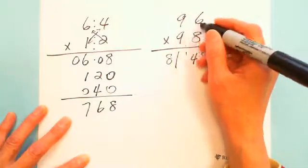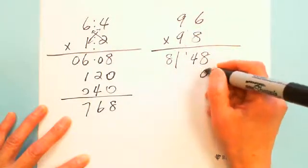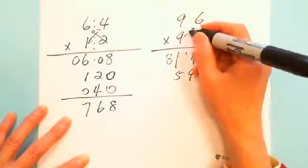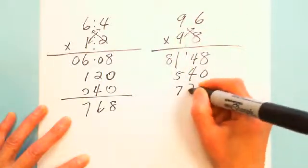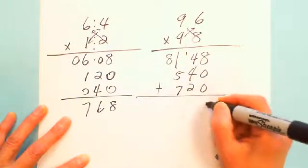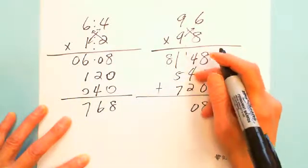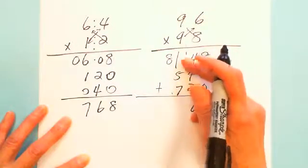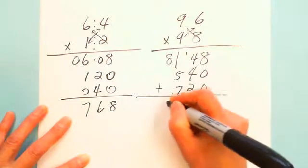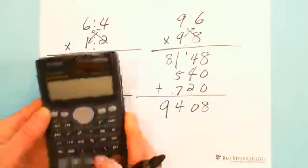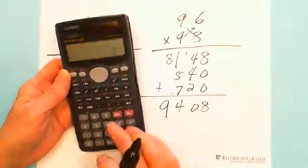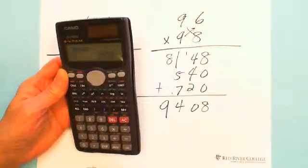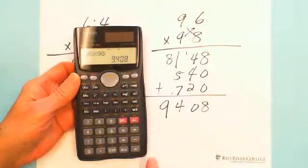You do this one first and do this one. This is 72. Let's add together. This is 8. This is 10, 4 carry 1. This is 10, 4 carry 1. This is 13, 14. This is 9. 9408. You can see 96 × 98 equals 9408.